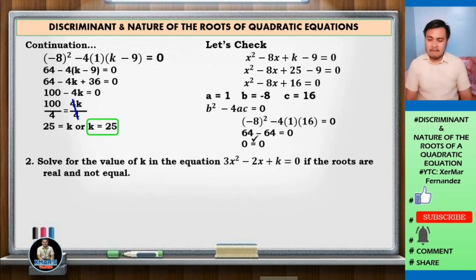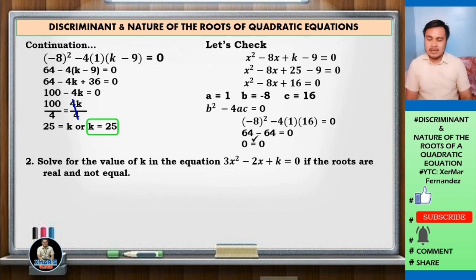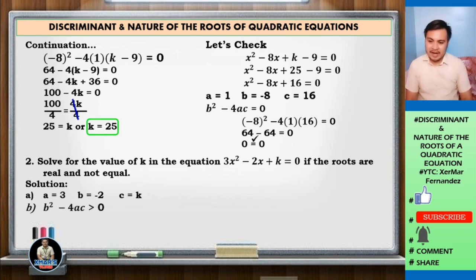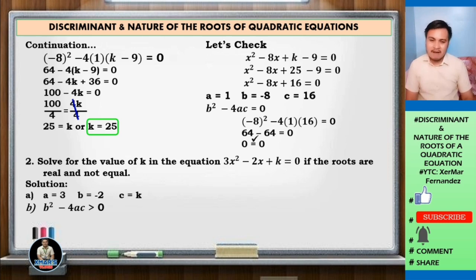Number 2: solve for the value of k in the equation 3x squared minus 2x plus k equals 0, if the roots are real and not equal. Identify a, b, and c: a equals 3, b equals negative 2, c equals k. The discriminant is b squared minus 4ac. Since the roots are real and not equal, the discriminant is greater than 0, so b squared minus 4ac is greater than 0.